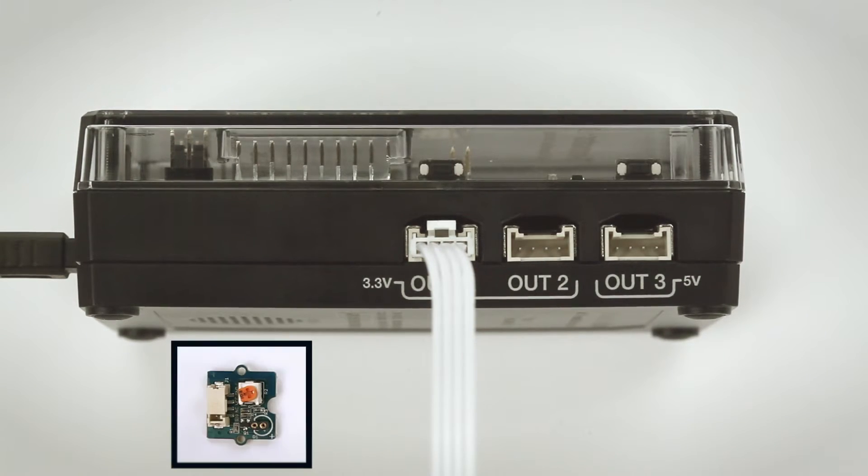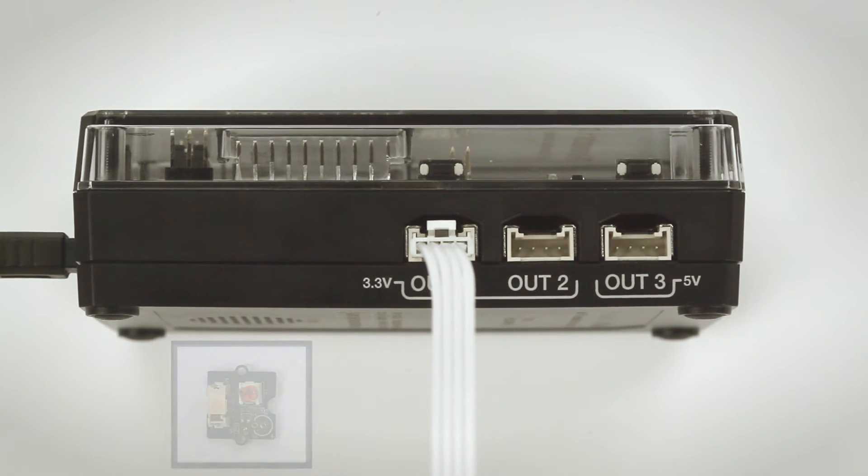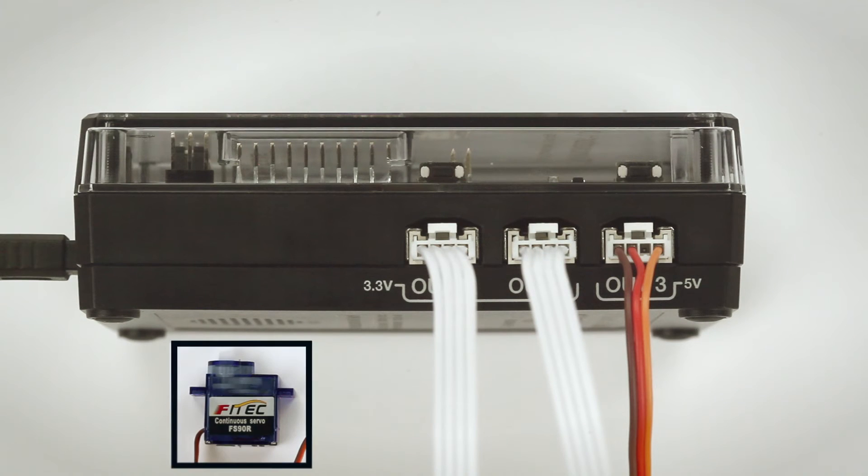First, connect the assembled LED to out one on the TI Innovator hub with TI Launchpad board. Then, connect the vibration motor to out two, and the servo motor goes in out three.